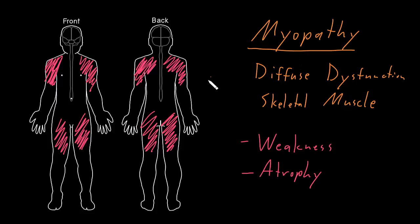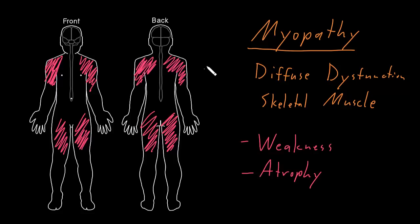What a patient will often come in complaining of is difficulty standing up out of chairs because the proximal leg muscles are weak, or trouble going upstairs from the proximal leg weakness, or trouble reaching above their head to comb their hair or reach objects on high shelves because of weakness of the proximal arms. And when we examine them, that's where we find weakness as well in these mild or moderate severity cases.